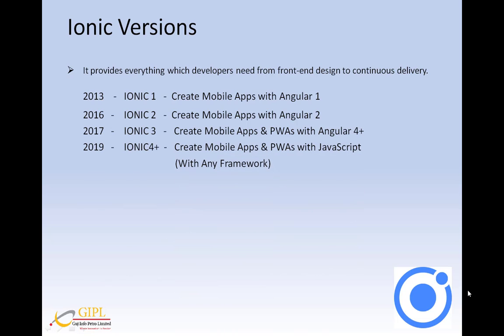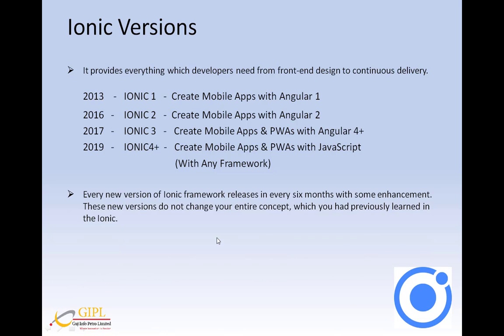Ionic 4 was introduced in 2019. Ionic 4 and all future versions of Ionic are based on web components. It builds native mobile apps and progressive web apps with JavaScript, HTML, and CSS web technologies. It supports all browsers that allow the use of HTML elements, which can run with any web framework you might be using. Therefore, web components and Ionic 4 can work with all frameworks. Every new version of the Ionic framework releases every 6 months with enhancements, and these new versions do not change the core concepts you previously learned. The latest version of Ionic is 5.4.1, released on 22nd October 2020.